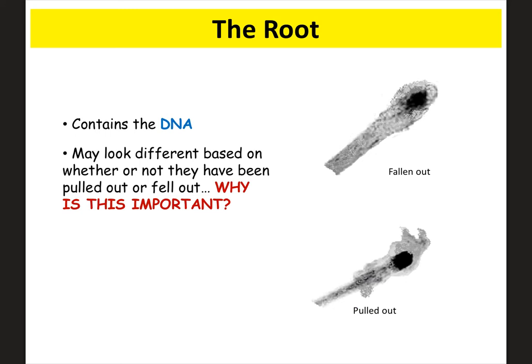In order for DNA to be present in a hair sample, the root has to be there. If it's not present when the hair sample is found, you won't be able to get DNA from that sample. But the root also provides other important information — you can determine if the hair was pulled out or fell out, which gives clues about whether there was a struggle. A root that looks intact versus one that looks damaged can indicate very different circumstances.